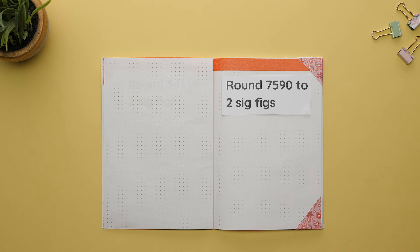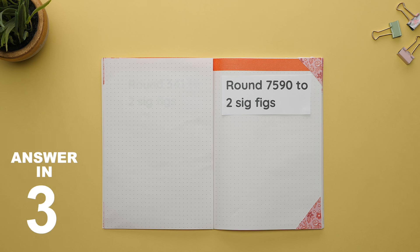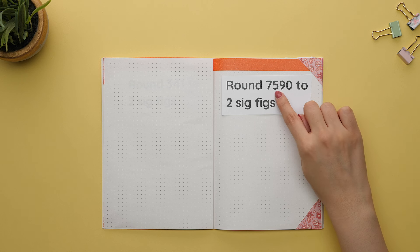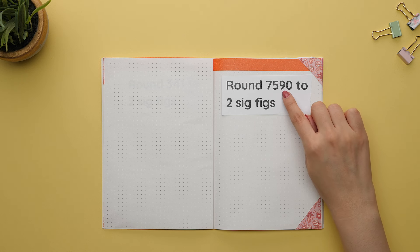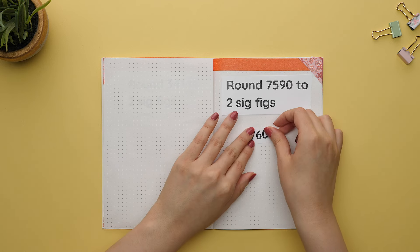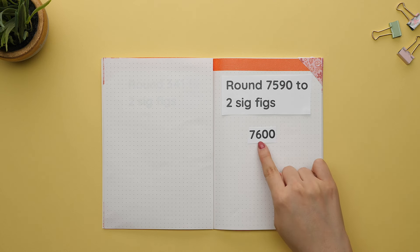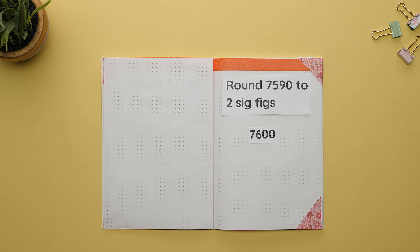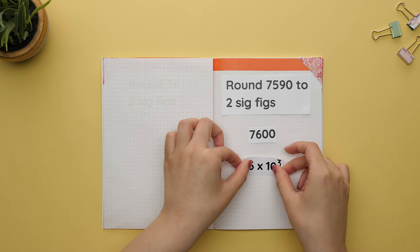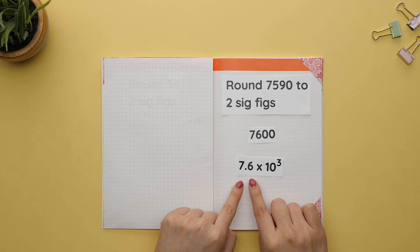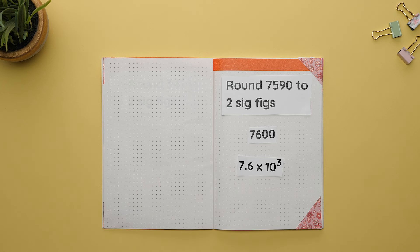If you didn't get that one right, don't worry — here's another chance to try on your own. For this question, we know that two sig figs stops at the five, but we need to look at the number to the right, and since it is greater than five, we will round up. Round the five up to six to get 7,600. Our zeros do not count as significant; only the seven and the six do. We could also write this as 7.6 times 10 to the third.